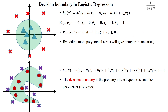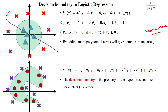Suppose if our dataset is non-linear, then we cannot use a straight line. You can see that the dataset is represented in non-linear format. If you use a straight line decision boundary, it cannot classify the given dataset correctly — there are circular data points here and triangular data points there, causing significant misclassification. So to avoid this, we will go for a non-linear decision boundary for the non-linear dataset.